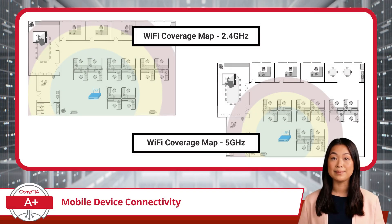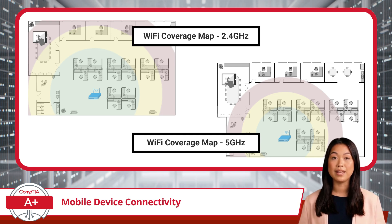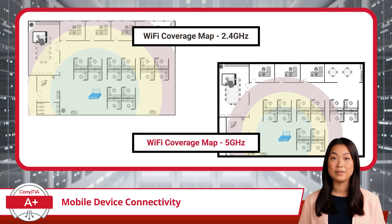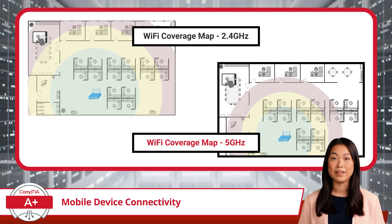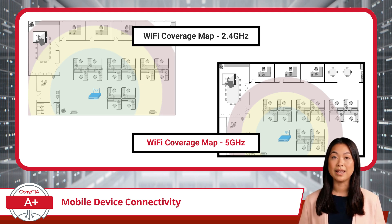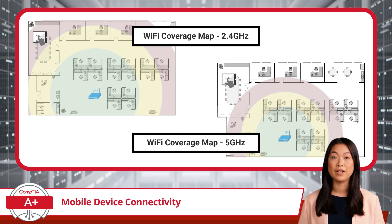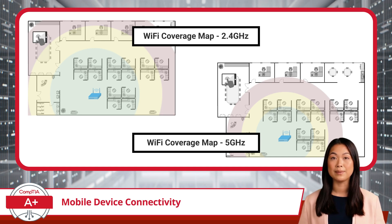To illustrate the practical differences between these bands, imagine an office environment with a Wi-Fi access point positioned towards the center of the space. A tablet in a conference room at the far corner of the office attempts to connect to the network. The 2.4GHz band, with its superior range and ability to penetrate walls, reaches the tablet with a reliable, albeit slower, connection. However, the 5GHz band, designed for speed rather than range, struggles to maintain a connection or may not reach the conference room at all, as its higher frequency signals weaken more quickly through walls and over distances. The Wi-Fi coverage map — also referred to as a heat map — shows how the 2.4GHz band provides extended coverage to the conference room, while the 5GHz band has a more limited range.